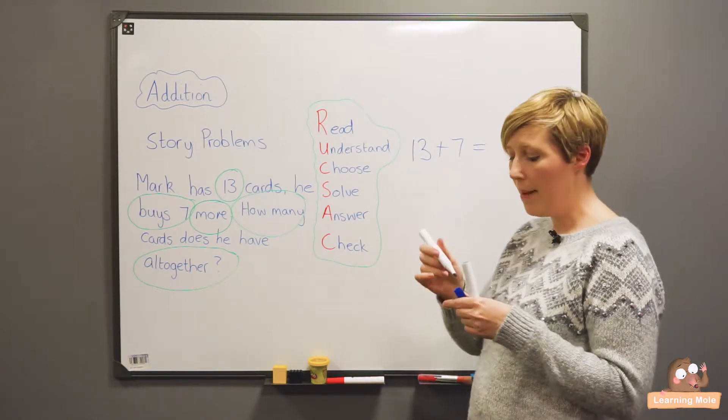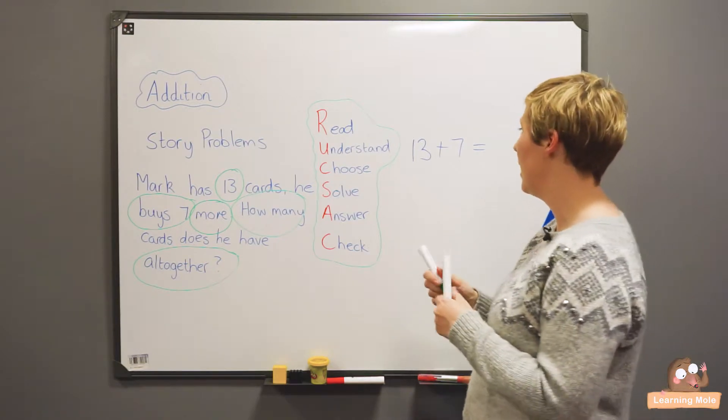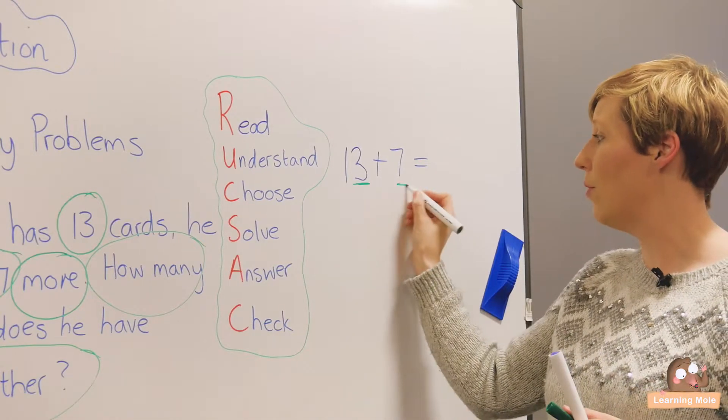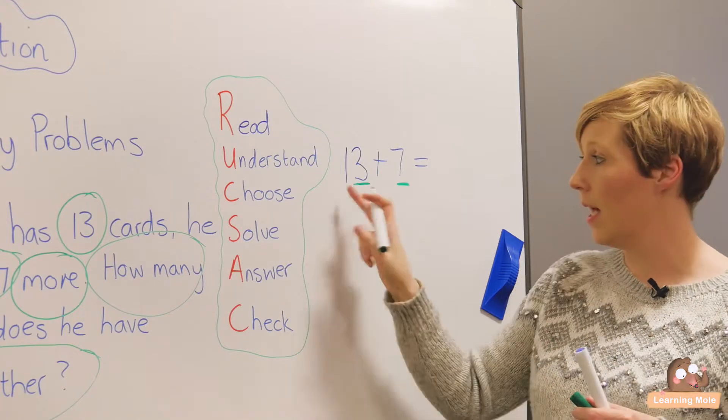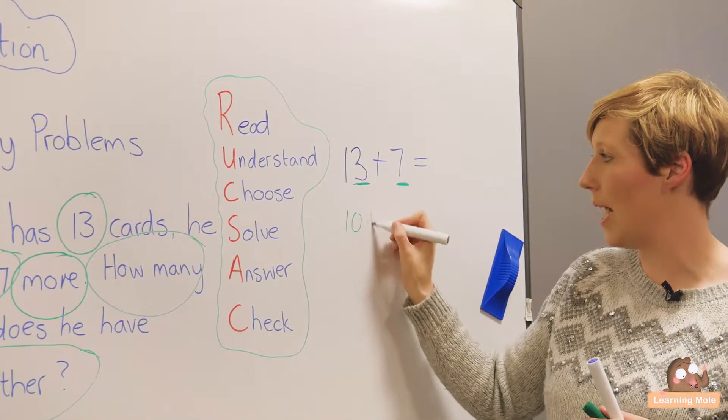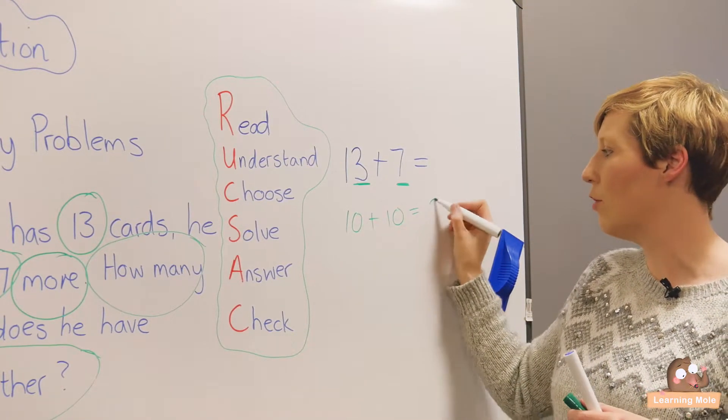So I might already use my known facts and I might already say straight away, well I know that 3 and 7 is 10 and I've got another 10 here. So it's going to be 10 plus 10 which is equal to 20.